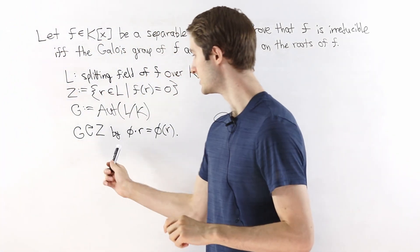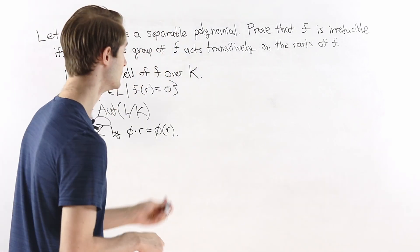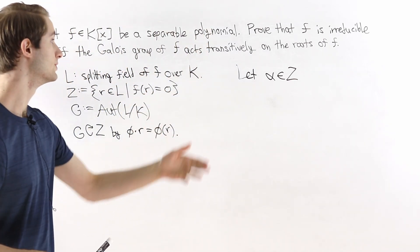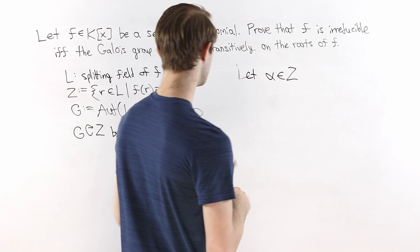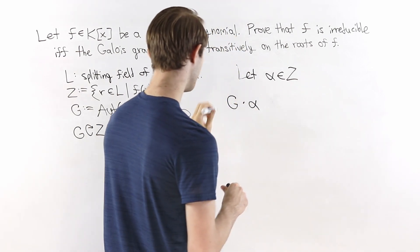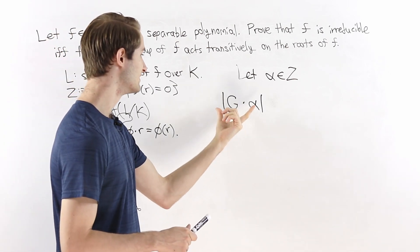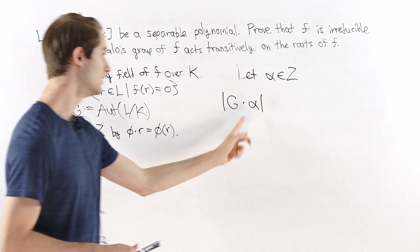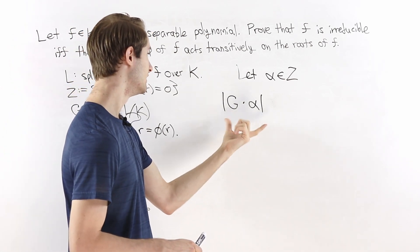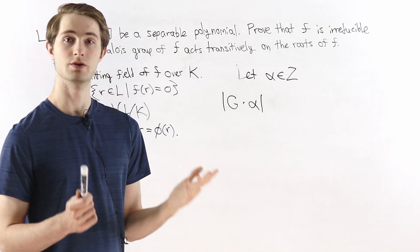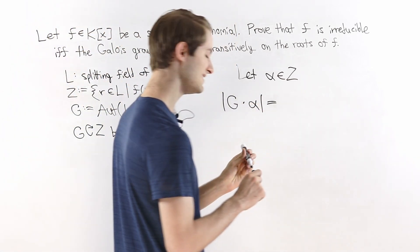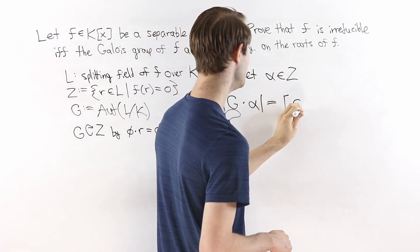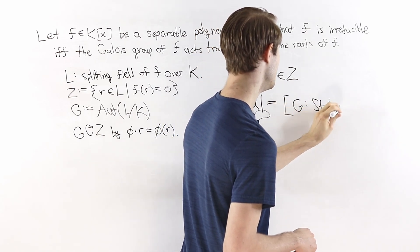Now that we've established the group action, we can begin the proof. Let α be an element of Z — some root of our polynomial in the splitting field. We consider the orbit of G on α: the set of elements reachable from α by applying every automorphism of L over k. By the orbit-stabilizer theorem, the size of the orbit of α under G equals the index of the stabilizer of α in G.